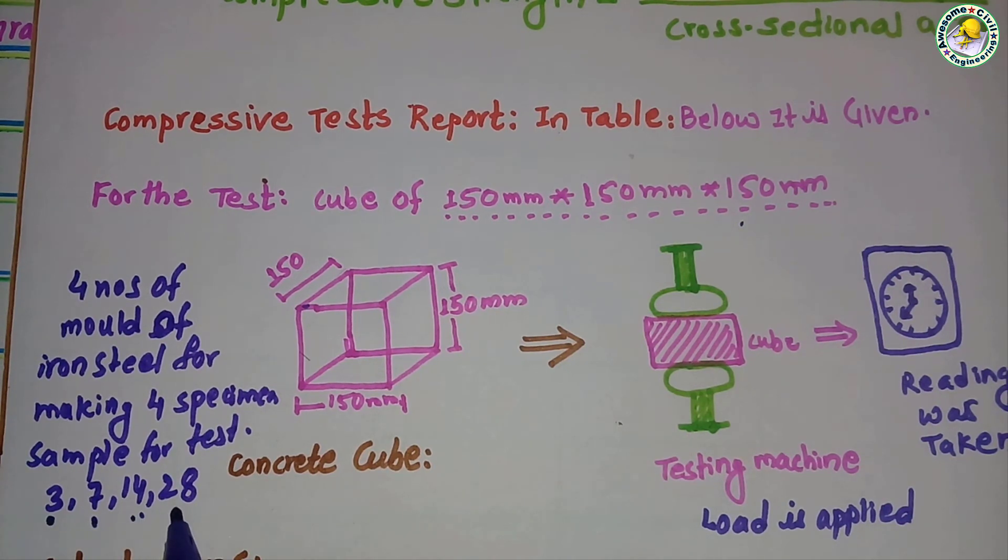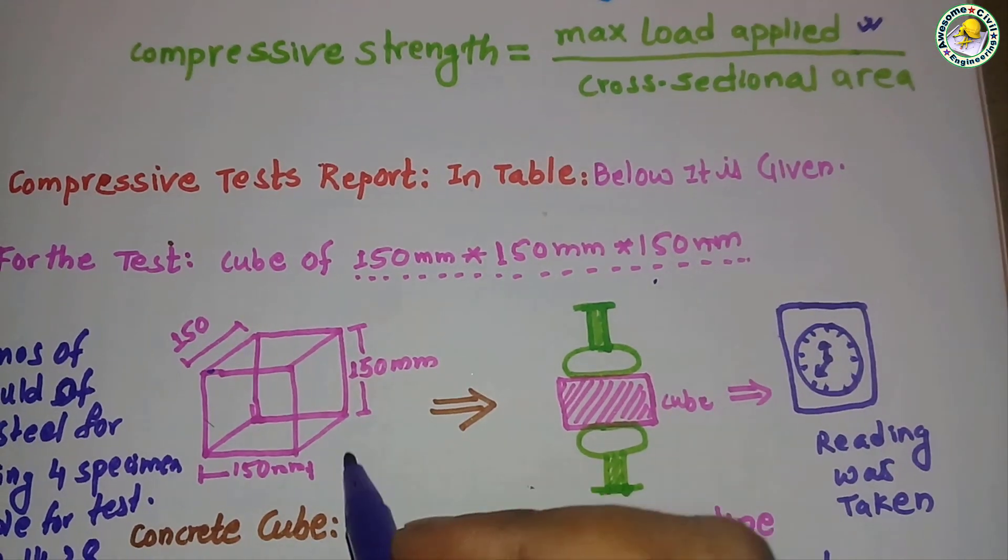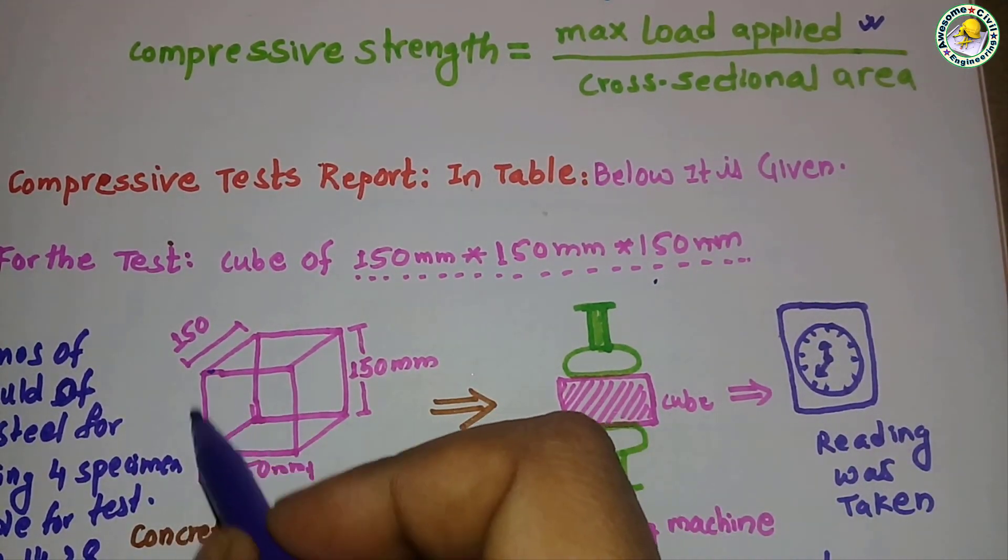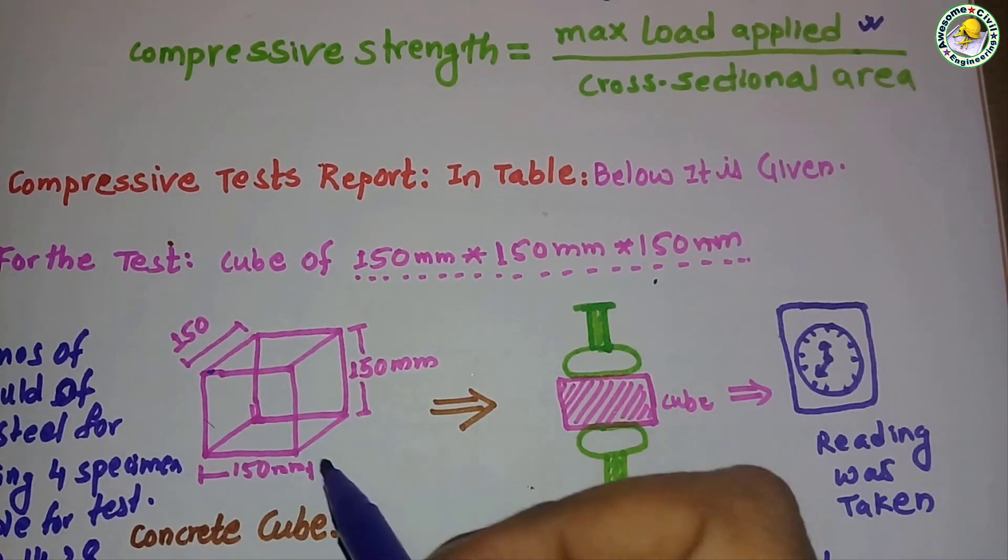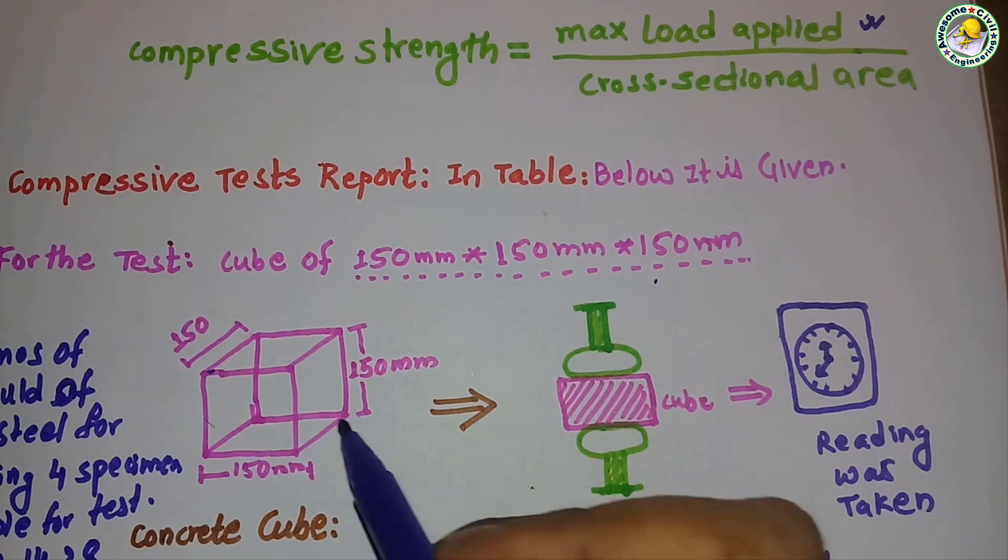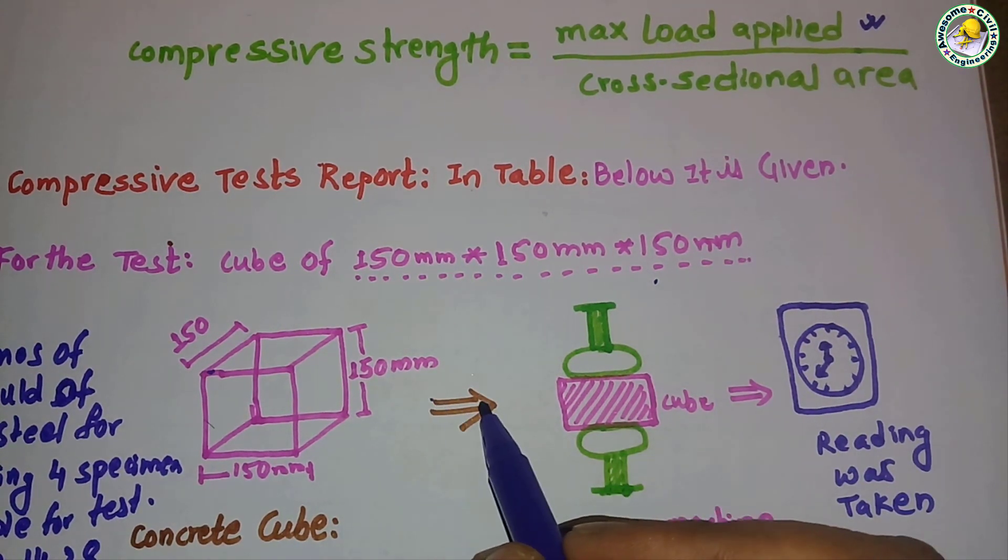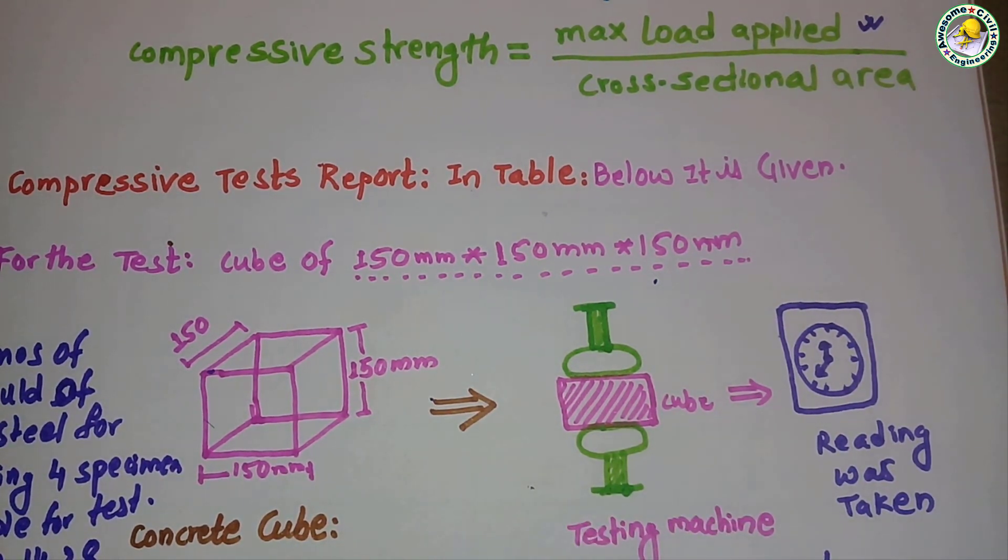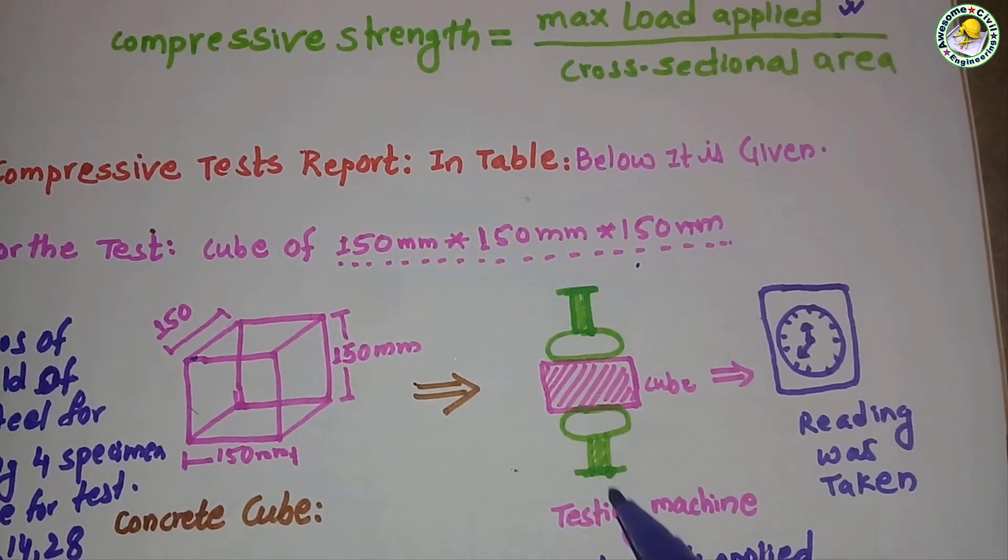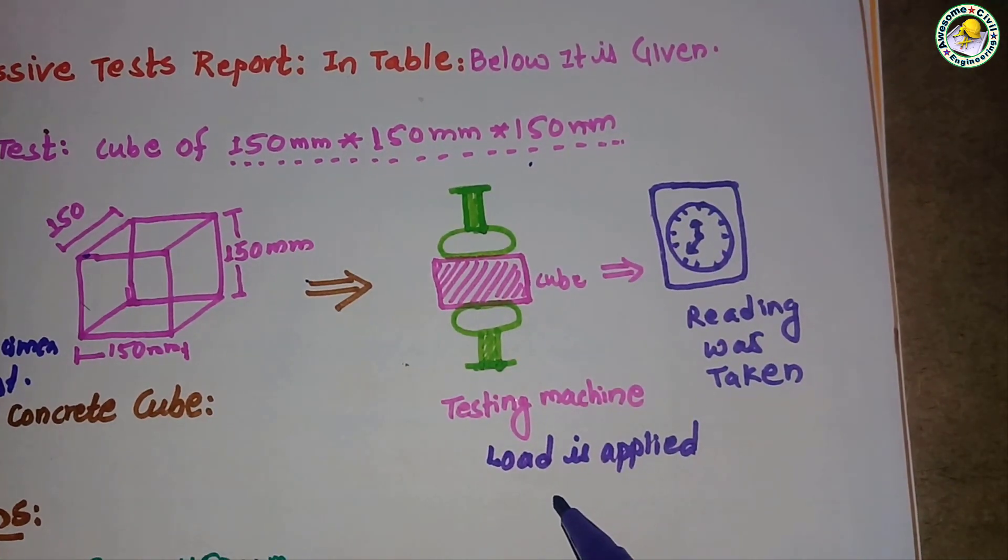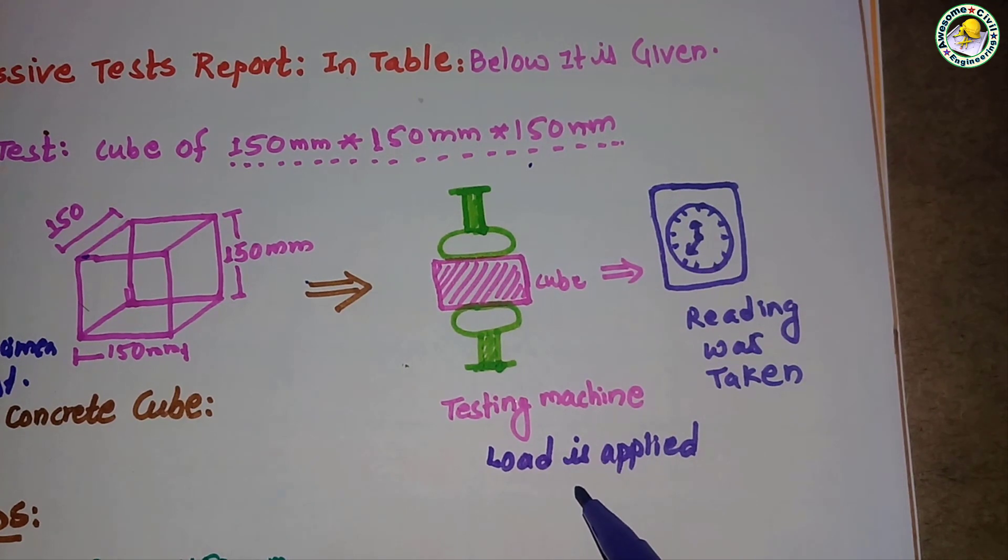Three days, seven days, 14 days, and 28 days test. First of all, the cube is casted in the mold and it is taken out after three days, seven days, and 14 days, and it is taken into the testing machine - compressive testing machine - and there the load is applied by the machine and the readings are taken from the reading meter.